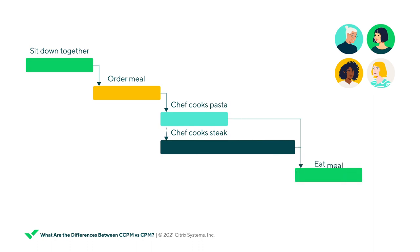Therefore, eating the meal, activity five, can't be finished by the entire group until all meals have arrived at the table. The longest route from activities one through five is the critical path. The two diners who ordered pasta have total float of 10 minutes — the amount of time it takes the cook to finish the steaks. They have flexibility with regard to when they start eating because such a delay won't delay the dinner ultimately finishing.